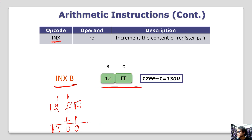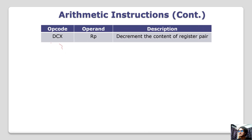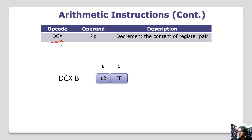The result for INX B with BC register pair: the higher byte is 13 and lower byte is 00, giving the total result in the BC register pair. Next is DCX — decrement extended register pair — so DCX B works the same way.